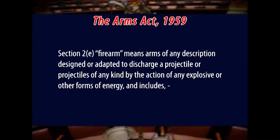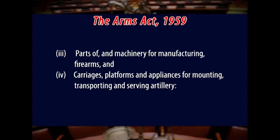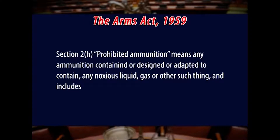Section 2E defines firearm as: arms of any description designed or adapted to discharge a projectile or projectiles of any kind by the action of any explosives or other forms of energy, and includes first, artillery, hand grenades, riot pistols, or weapons of any kind designed or adapted for the discharge of any noxious liquid, gas, or other such thing. Second, accessories for any such firearm designed or adapted to diminish the noise or flash caused by the firing thereof. Third, parts of and machinery for manufacturing firearms. And fourth, carriages, platforms, and appliances for mounting, transporting, and serving artillery.